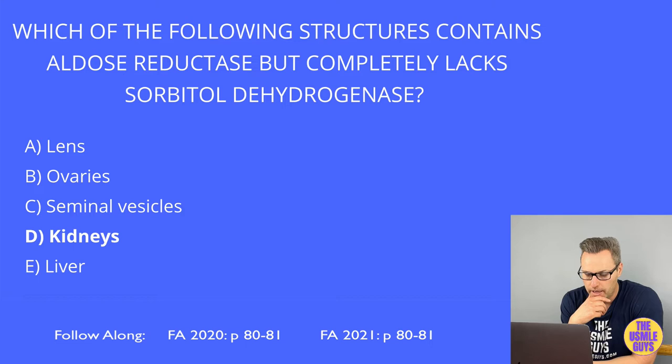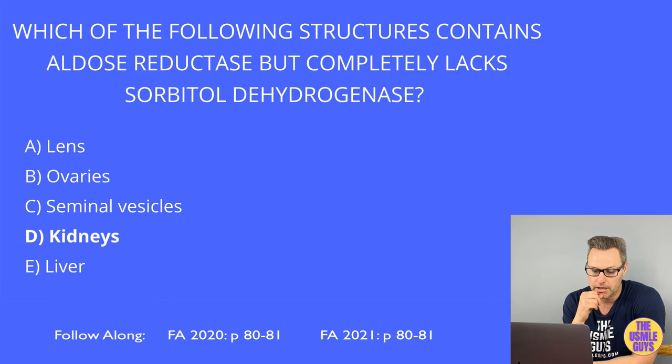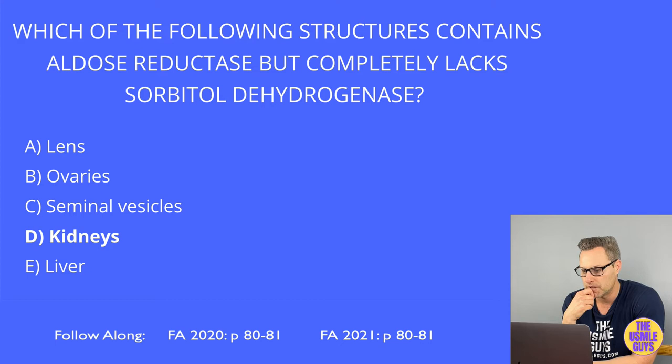Next up is classic galactosemia. This is also inherited in an AR manner, and caused by an absence of the galactose-1-phosphate uridyl transferase enzyme. This causes an accumulation of toxic galactitol, especially in the lens of the eye. You'll typically see this starting when the baby begins to feed, because lactose in both breast milk and formula contains both glucose and galactose.